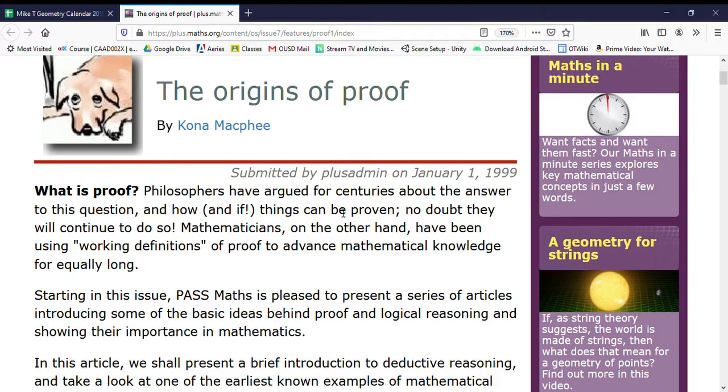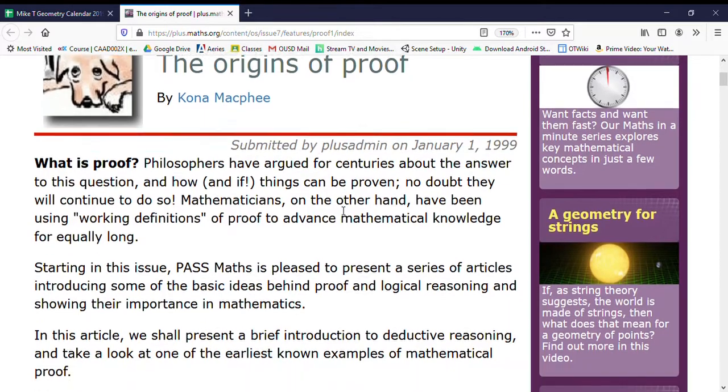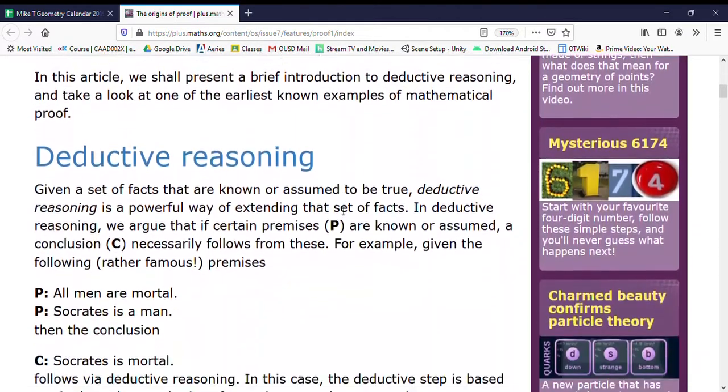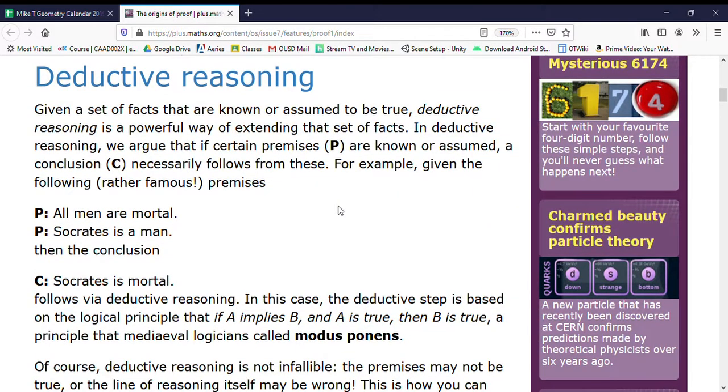The origins of proof: What is proof? Philosophers have argued for centuries about the answer to this question and how and if things can be proven. No doubt they will continue to do so. Mathematicians, on the other hand, have been using working definitions of proof to advance mathematical knowledge for equally long.